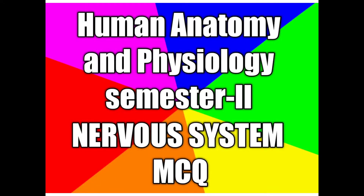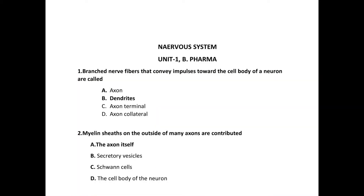Hello students, today's topic is multiple choice questions of the nervous system. First question: branched nerve fibers that convey impulses towards the cell body of a neuron are called — four options: axon, dendrites, axon terminal, axon collateral. The correct choice is dendrites.